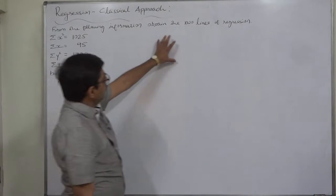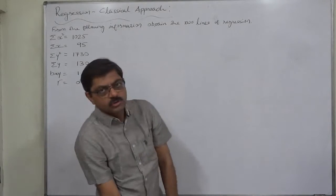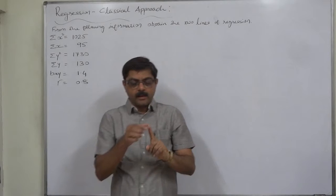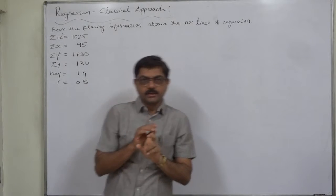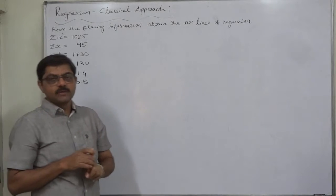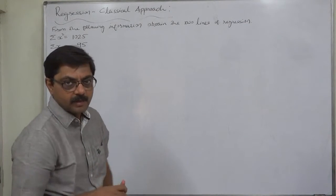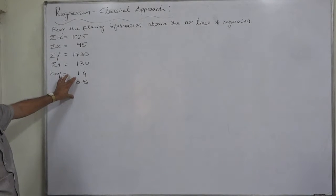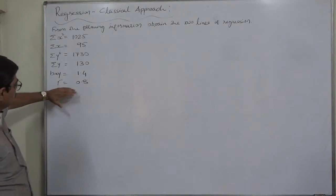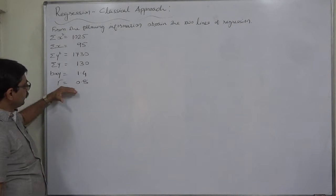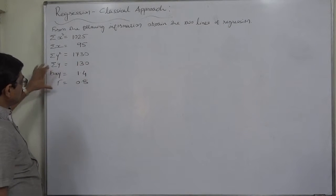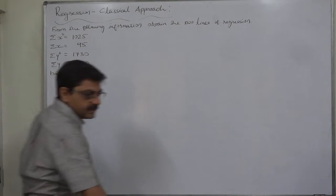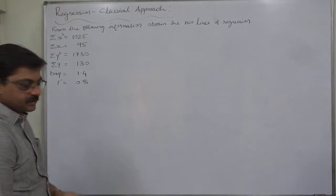To find the two lines of regression we need four things: two coefficients of regression, byx and bxy, and two means, x bar and y bar. bxy is readily available, and we also have the coefficient of correlation.